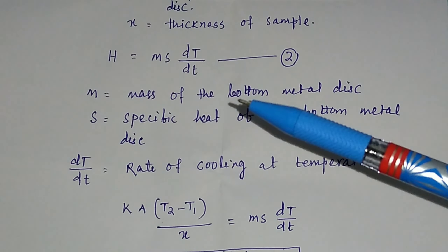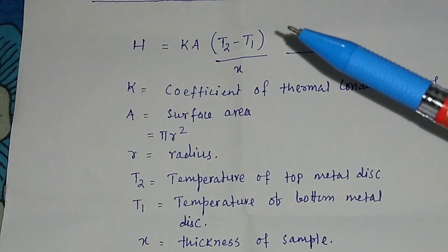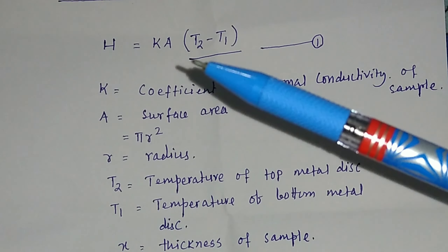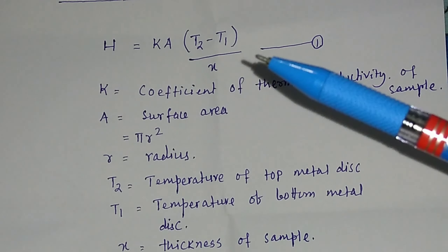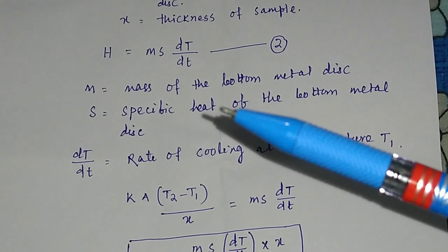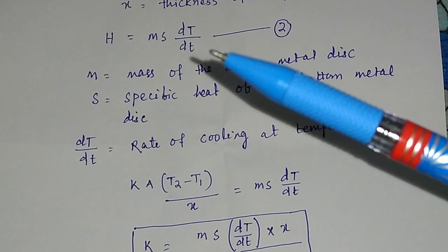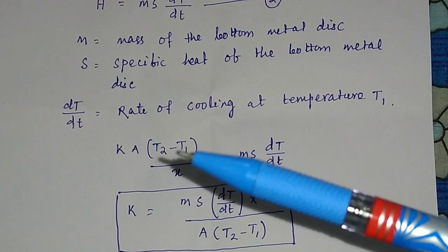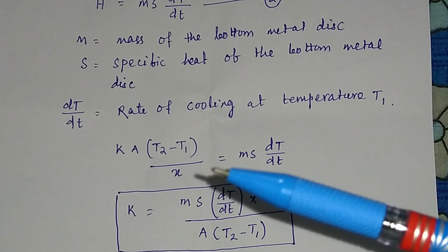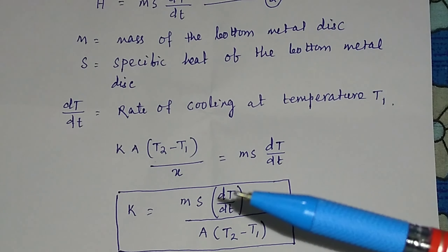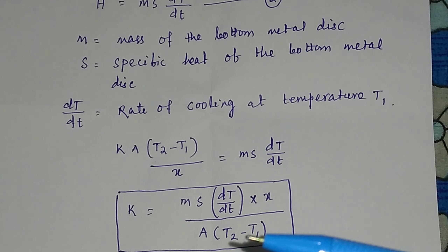From equation one, the heat due to conduction is H = KA(T2 − T1)/X. From equation two, the heat due to radiation is H = ms(dT/dt). Equating both: KA(T2 − T1)/X = ms(dT/dt), so K = ms(dT/dt) · X / [A(T2 − T1)].